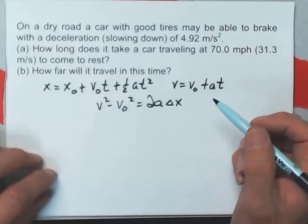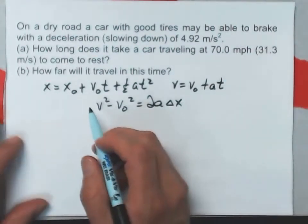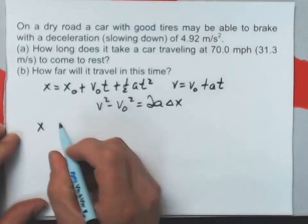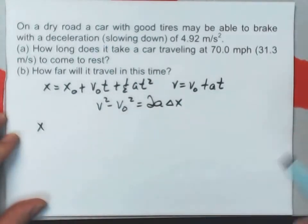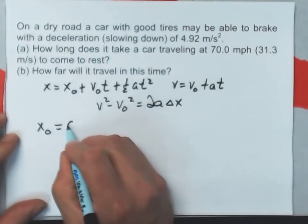I know the values of v naught and the acceleration here. I can let x naught equal 0 without any problem. x naught will be the position at which the acceleration starts, so I'll just define that to be 0.